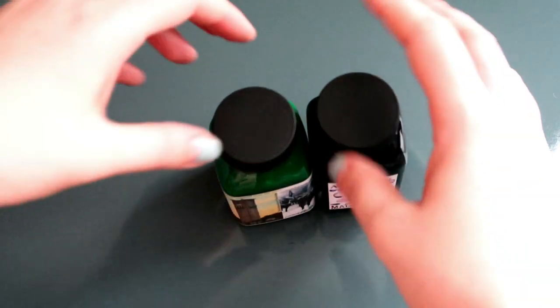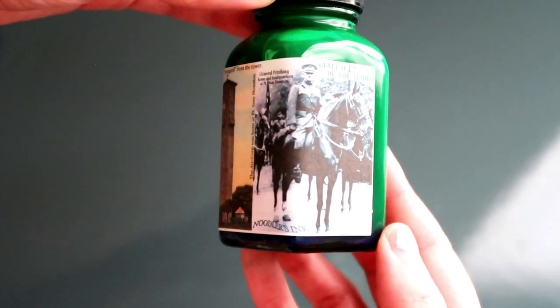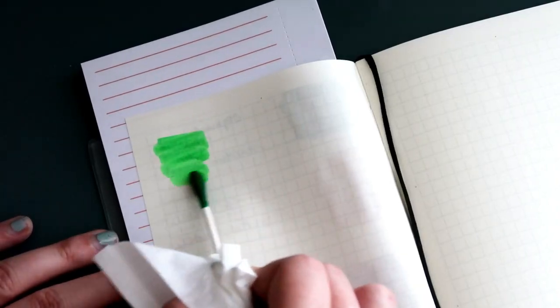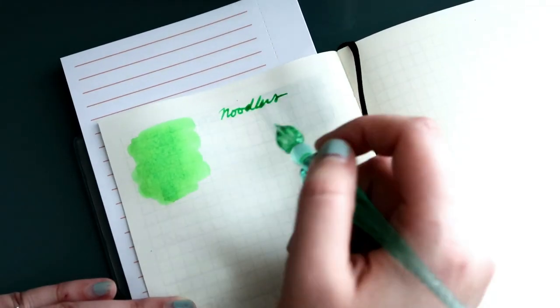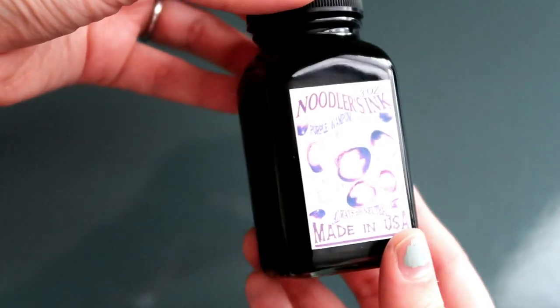Noodler's inks are next. I received this bright green from my sister, and it's called General of the Army. I love Noodler's bottle labels. They are so unique and sometimes hard to locate the color name, but still really great inks. I hope to collect more of this brand.